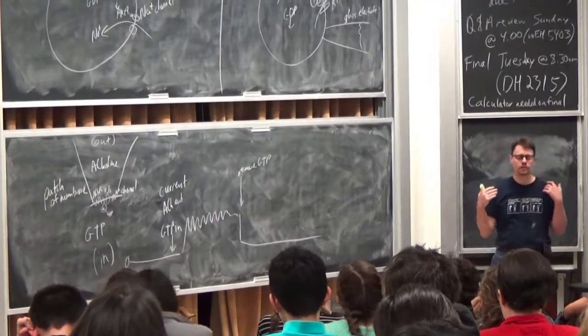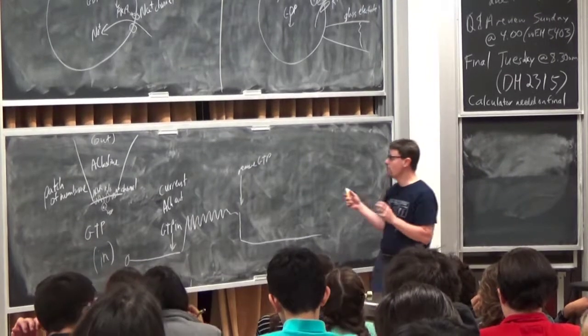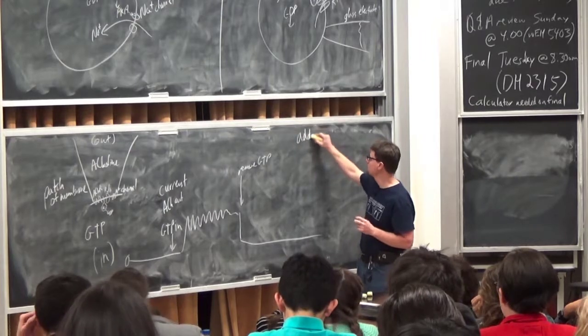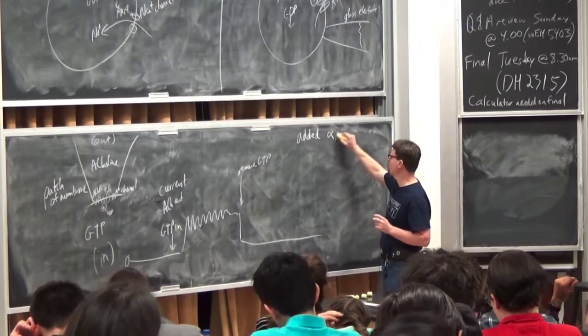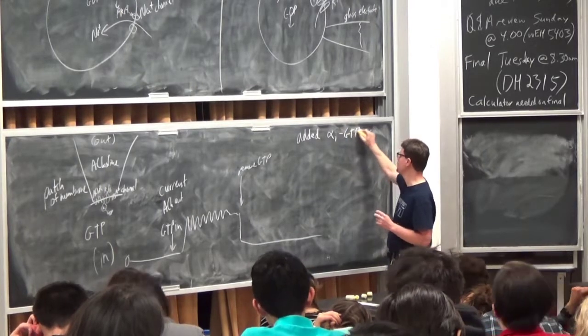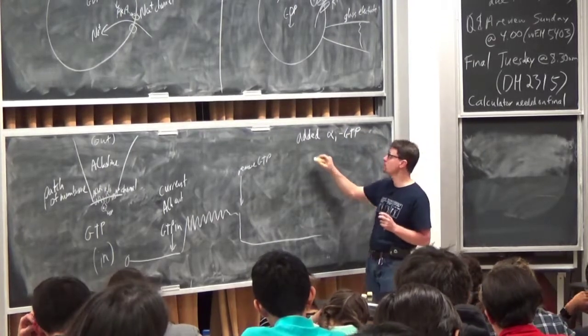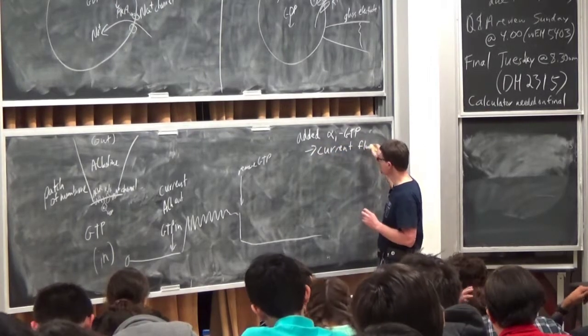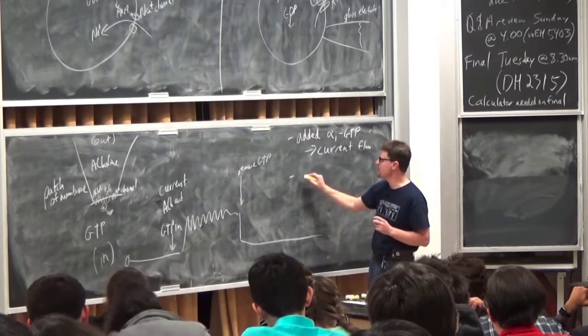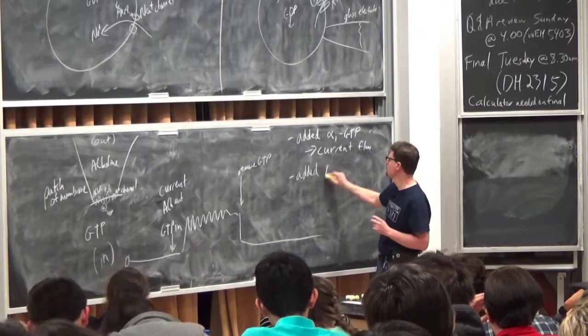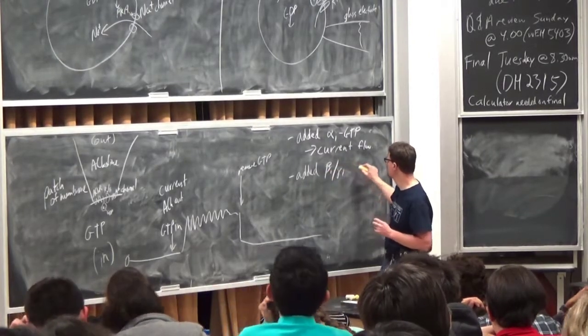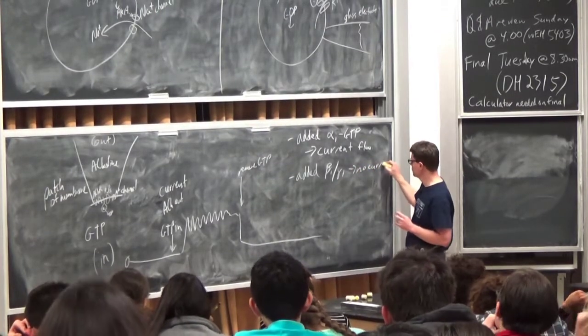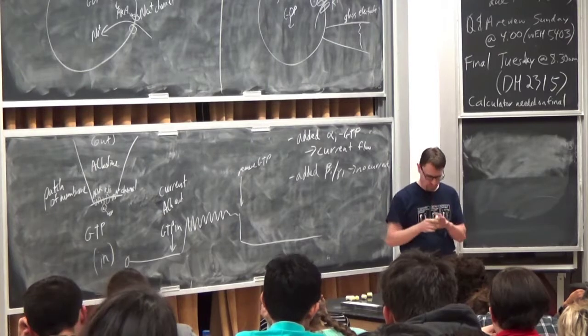OK. And so last time I talked about an experiment that Lutz-Birnbaumer did, where what he did was he added alpha-I G protein that already had GTP associated with it. And the result that he got was that he saw current flow. And then in a separate experiment, he added beta and gamma G proteins and saw no current.